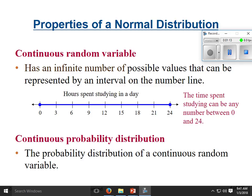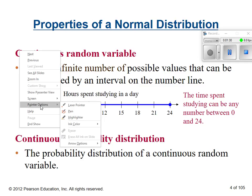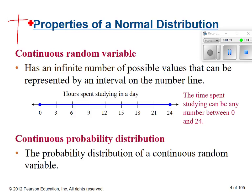So, continuous random variable. Again, we talked about discrete random variable. Discrete random variable - remember that was your x, and we had to set up our little tables with x going 0, 1, 2, 3, 4, and then you had your probability of x for each one. Well, now instead of just dealing with things that you can count, remember continuous - when we talked about this last chapter - that's things that probably have to be measured.